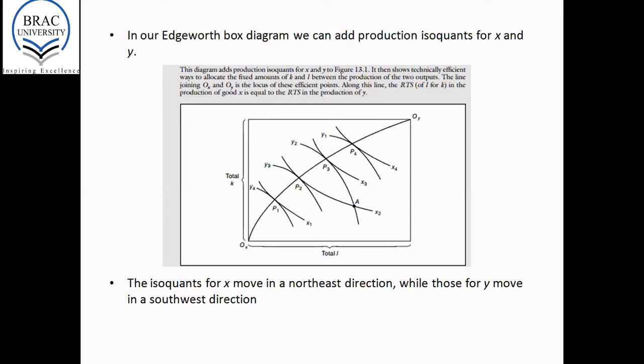Namely Y1, Y2, Y3, and Y4. So as you move up the diagram from whichever origin, a higher isoquant represents a higher level of output. So at X2, you're producing more than you are producing at X1, and so on.